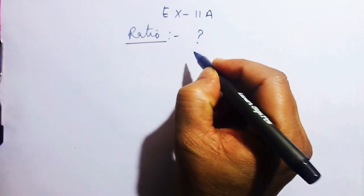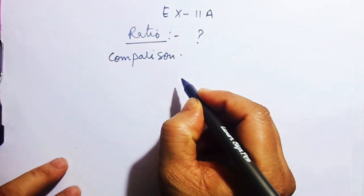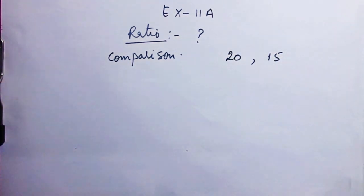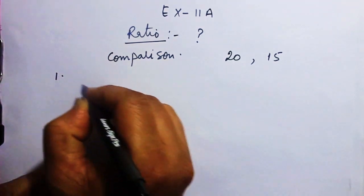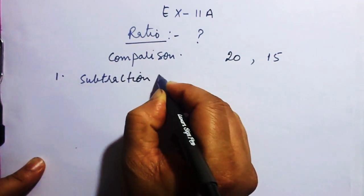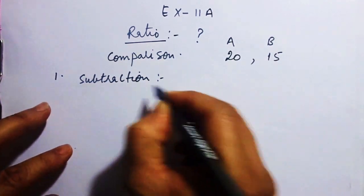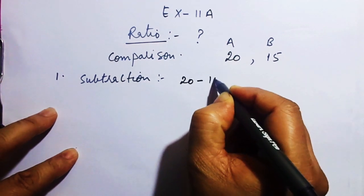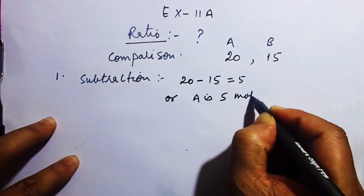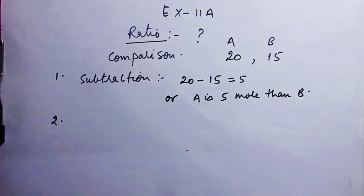Before we talk about ratio, let's talk about comparison. For example, we have two numbers: 20 and 15. How do we compare? The first method is subtraction. We say a is 20, b is 15, therefore 20 minus 15 equals 5. So a is 5 more than b, or b is 5 less than a. The second method is division.